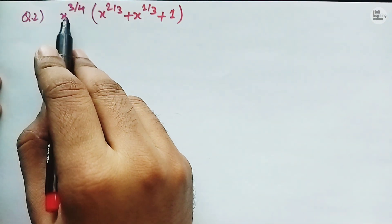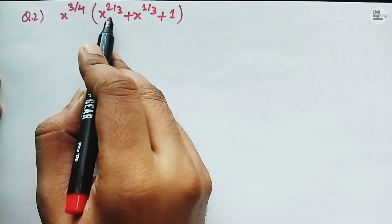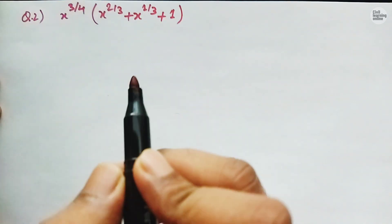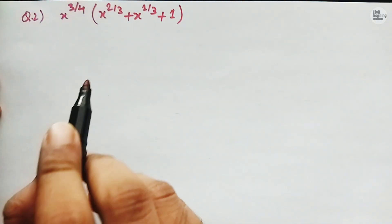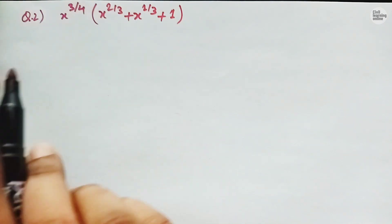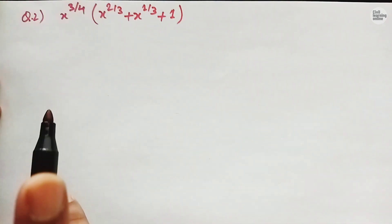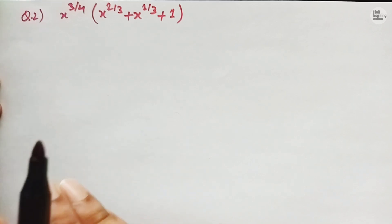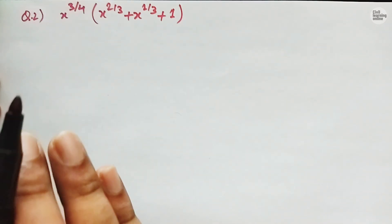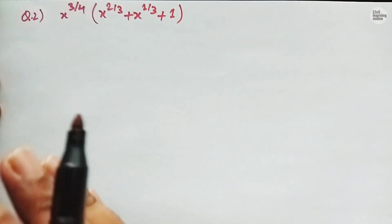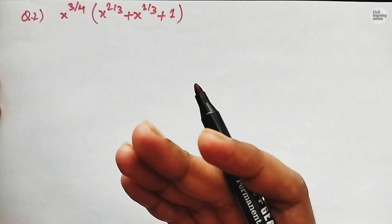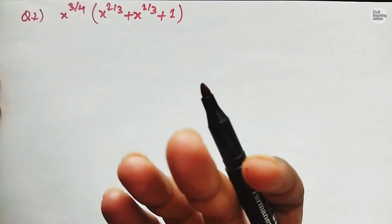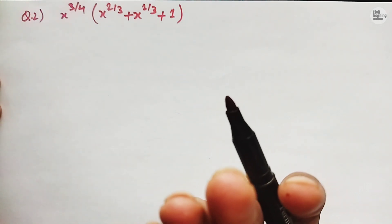Our second question is x to the power 3 by 4 times the quantity x to the power 2 by 3 plus x to the power 1 by 3 plus 1. I have selected this problem because it can be solved by both the sum rule and the product rule, but here I am discussing the sum rule. I will solve it using the product rule in an upcoming lecture.